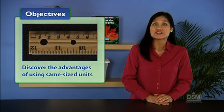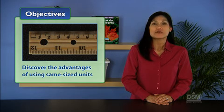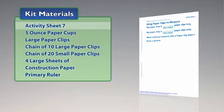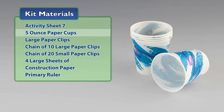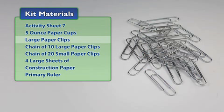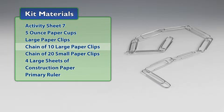Students then discover the advantages of using same-sized units for measuring. From the kit, you will need Activity Sheet 7, 5-ounce paper cups, large paper clips, and a chain of 10 large paper clips.